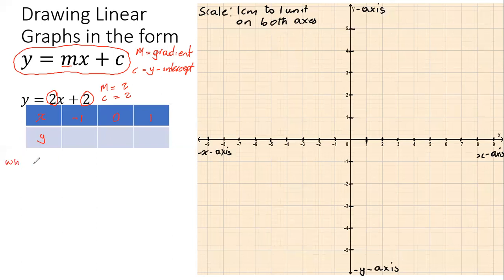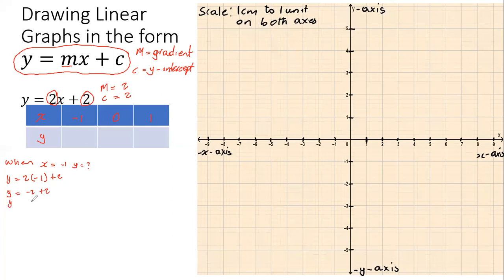When x equals negative one, we substitute into the equation: y = 2 × (−1) + 2. Two times negative one gives us negative two, and negative two plus two gives us zero. So when x = −1, y = 0.